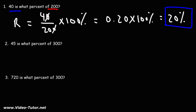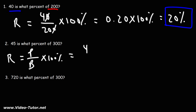For number two, we're going to follow the same procedure: 45 is what percent of 300? Using the formula, the rate is going to be the part over the base, times 100 percent. The part is 45 and the base is 300.